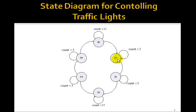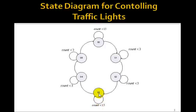State S1 will be the yellow-red state. We want to stay here for one second — that is 3 clock pulses. If the count is less than 3, we stay here. When the count gets to 3, we go to the red-red state and stay for one second, or three counts. Then we go to the green-red state and stay for five seconds when the count is less than 15. Then we move to yellow-red for one second, red-red for one second, and then back to the original red-green. We'll just keep cycling through.